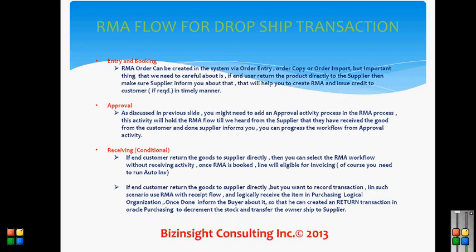The second type of flow is if the end customer returns the goods to the supplier directly but you still want to record the transaction. In this scenario, use the RMA with ship flow and logically receive the item in a purchasing logical organization. Once done, inform the buyer that you have performed a logical receiving in your inventory organization, so the buyer can create a return transaction in Oracle Purchasing to decrement the stock and transfer ownership to the supplier. Logically the stock goes up, but the product is still with the vendor, so the buyer performs a return transaction to correct this.